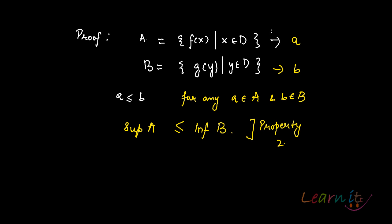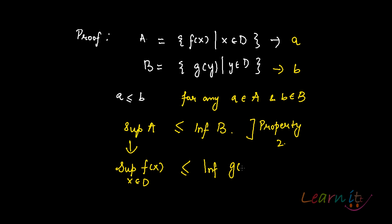And hence, from here, you get that supremum of A equals supremum of f(x) for x in the domain, which is less than or equal to — not supremum, it's infimum — infimum of g(y), where y is also in the same domain. So in this kind of scenario, the least upper bound will always be less than or equal to the greatest lower bound, in case we have functions like these.